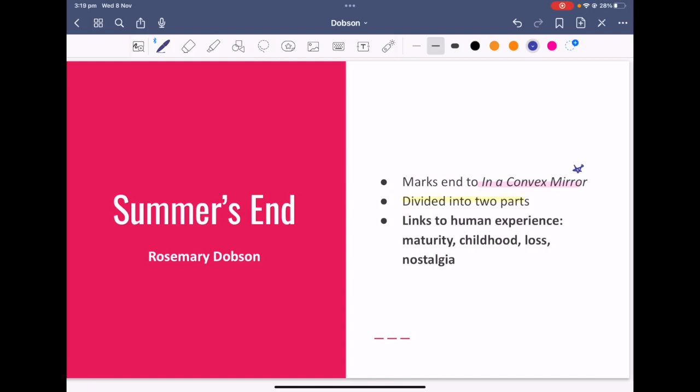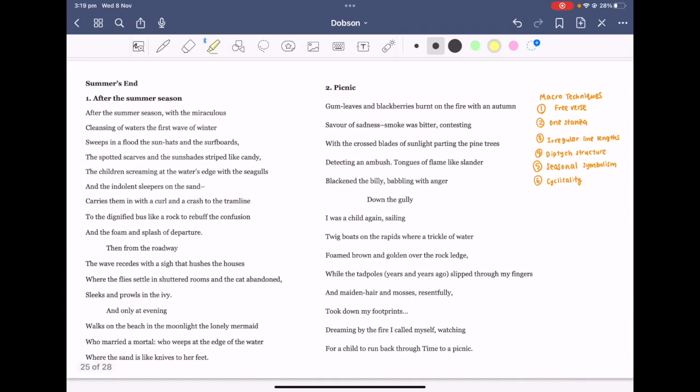Something that is a little different about this poem is that it is divided into two parts, which we'll get to as we discuss the poem together. Some key links to human experience that you might consider are maturity, childhood loss, and nostalgia. As per usual, pause the video and read both parts of the poem. Because I don't want the video to be too long though, today I'll unpack the macro techniques and the first part titled After the Summer Season, and then we'll have a look at Picnic in another video.